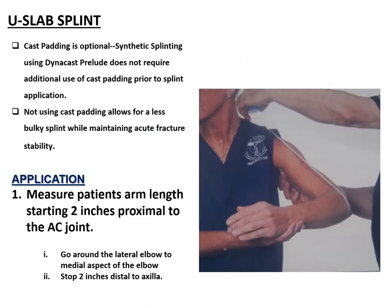For the U-slab, I often use synthetic splinting. If using synthetic splinting that comes with its own padding, it is not necessary to use additional undercast padding as this will make the construct too bulky. However, if using gypsona plaster of Paris, proper undercast padding must be used. The application method is to measure the patient's arm length starting two inches proximal to the AC joint, going around the lateral elbow and up into the medial aspect of the elbow, stopping two inches distal to the axilla. It is usually advisable to over-measure by a couple of inches, as it is easier to fold the edges back than to make it longer.